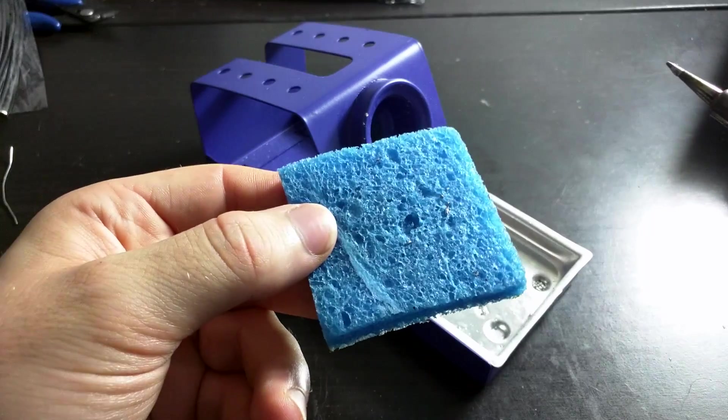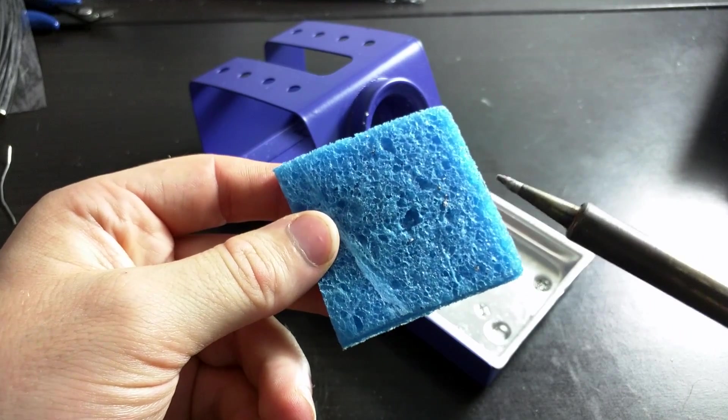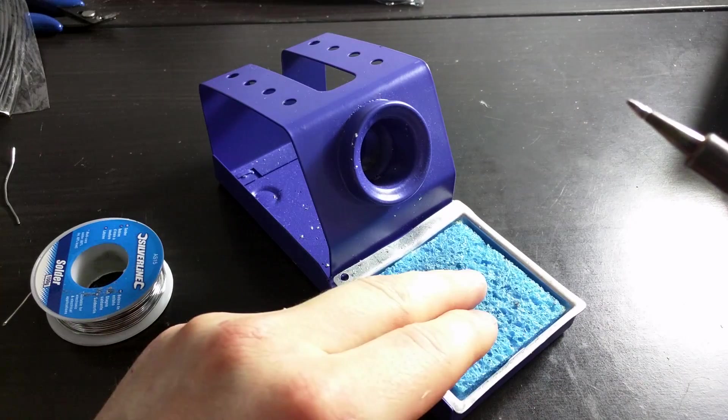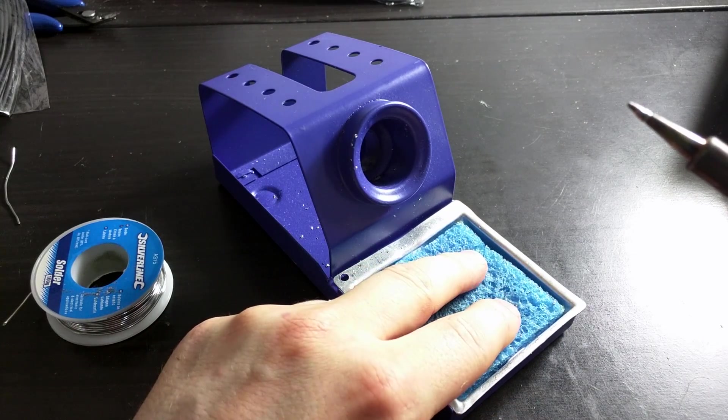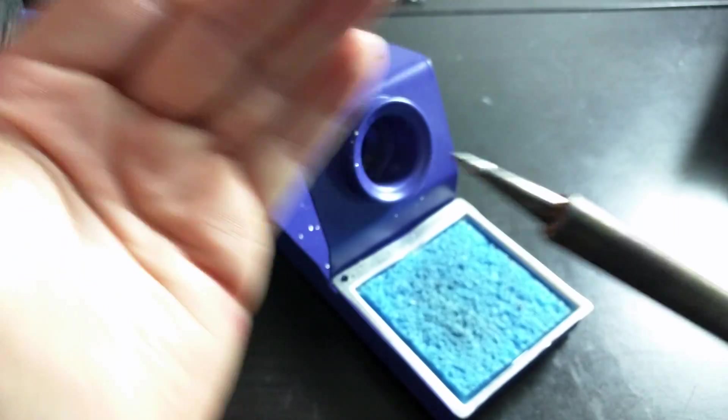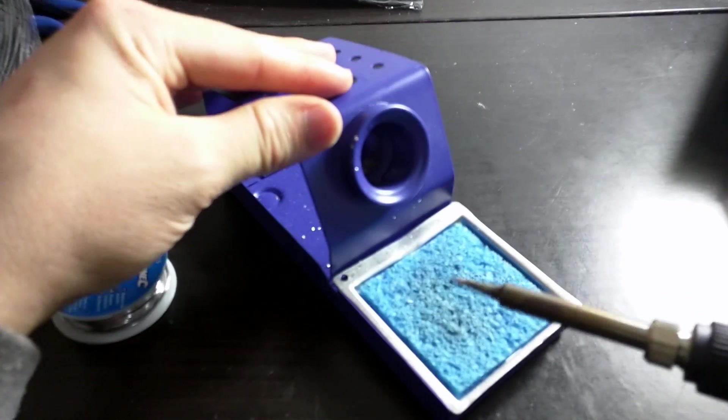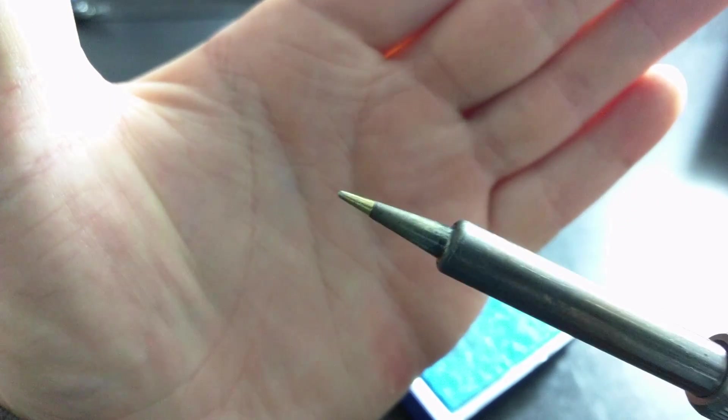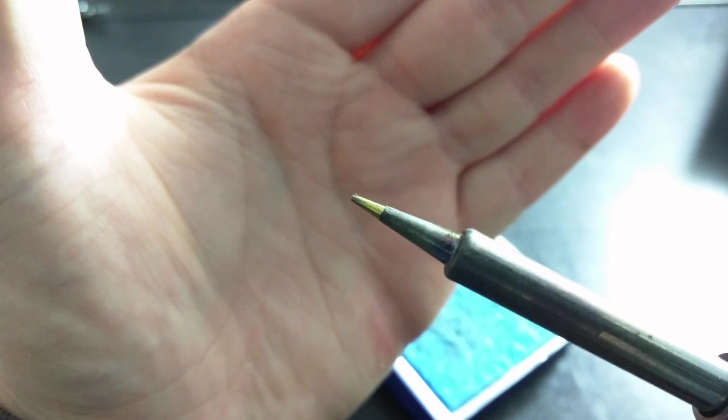When you have a soldering iron, you should have a wet sponge that you can clean your soldering iron on. This iron holder has an area for a sponge, so I've slightly wet this sponge. Make sure your iron is hot, and the only thing you need to do is give the iron a few wipes on the sponge. As you can see now, the tip on this iron is clean and ready for fresh solder.